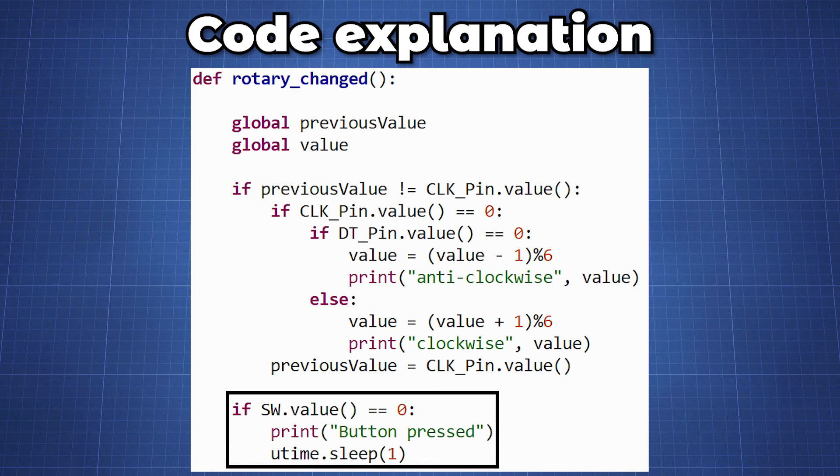In our second test we test to see if the knob is being pressed. If the SW pin goes to low logic level we will print out button press and set a short delay to help with the bouncing.